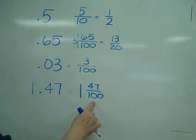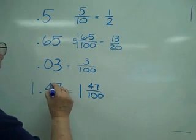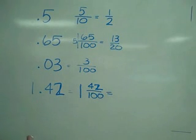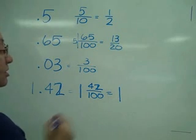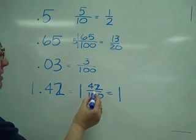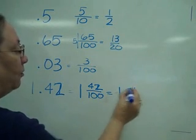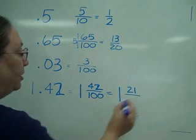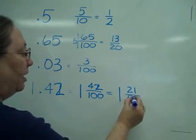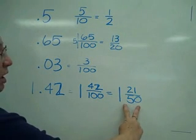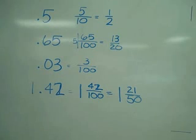If it had been 42 hundredths, then I would have had to have kept reducing. The 1 still just hangs around. These are both even. So I would take 2 into 42 gives me 21, 2 into 100 gives me 50. So 1 and 42 hundredths is 1 and 21/50.